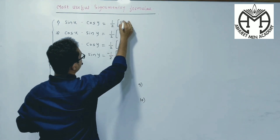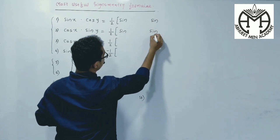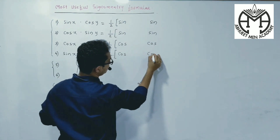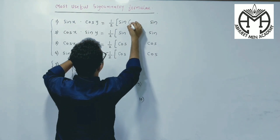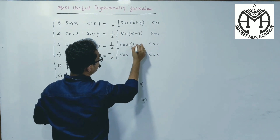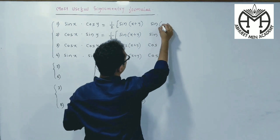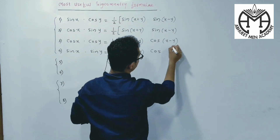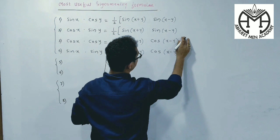it is Sin-Sin, here it will be Sin-Sin. Here it is Cos-Cos, here it will be Cos-Cos. First is the addition of the two angles: X plus Y, X plus Y, X plus Y, X plus Y.